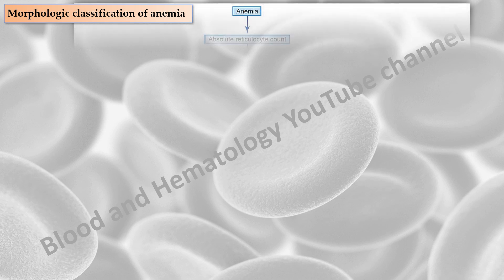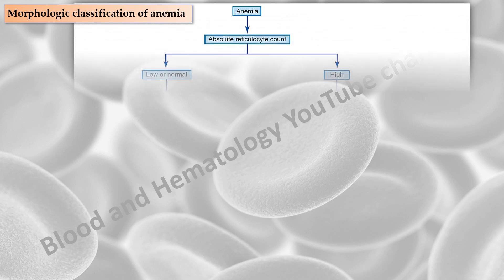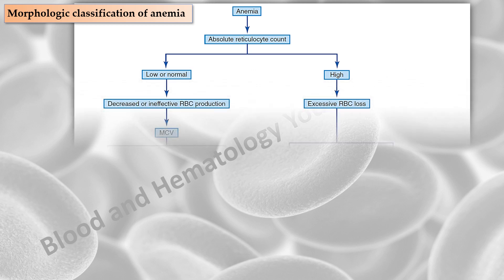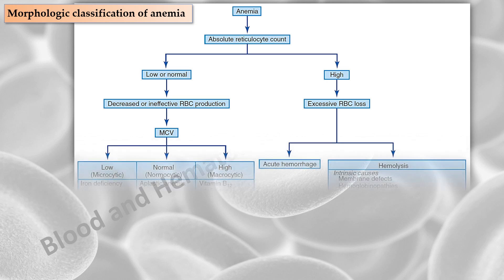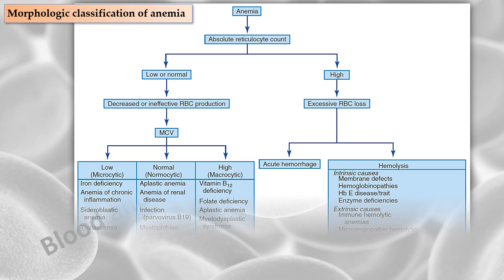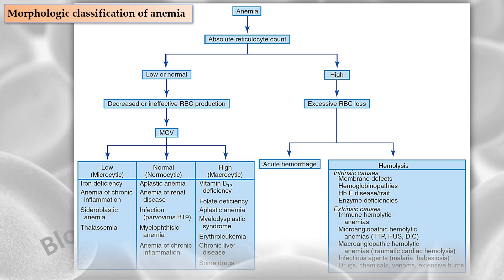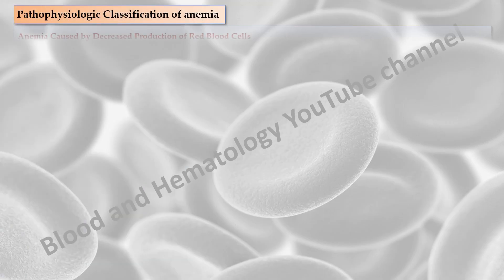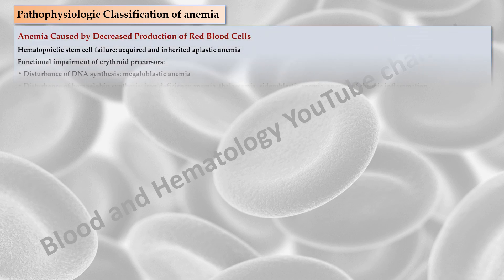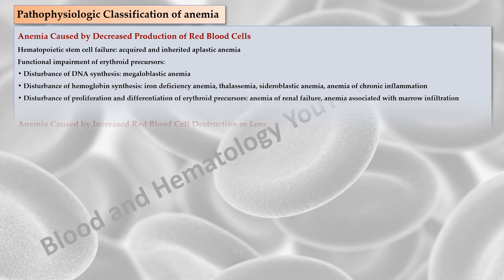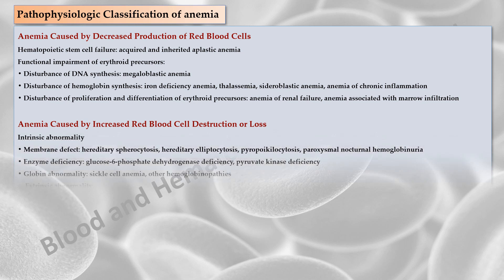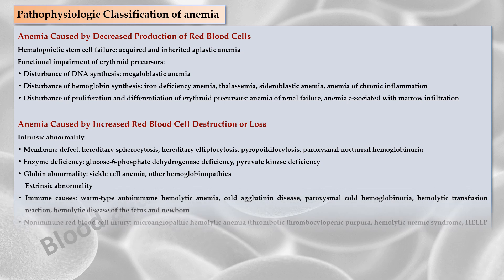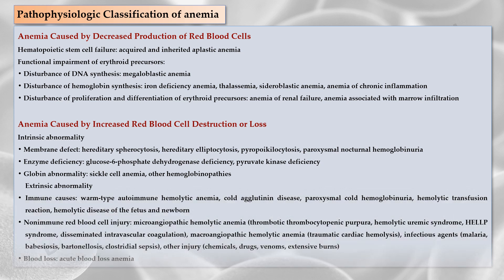The absolute reticulocyte count is useful in initially classifying anemias into two categories: decreased or ineffective erythrocyte production, and excessive erythrocyte loss. The MCV can further classify the anemia into three subgroups: microcytic, normocytic and macrocytic anemias. The excessive erythrocyte loss category includes acute hemorrhage and the hemolytic anemias with shortened erythrocyte survival. The pathophysiologic classification is based on mechanisms causing the anemia, classifying anemias into two groups: anemia caused by decreased erythrocyte production, and anemia caused by increased red blood cell destruction or loss. Some anemias have more than one pathophysiologic mechanism.